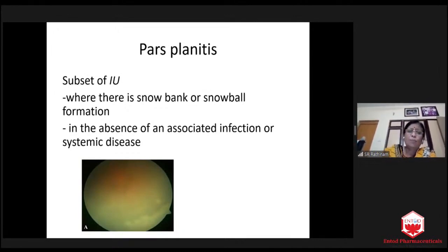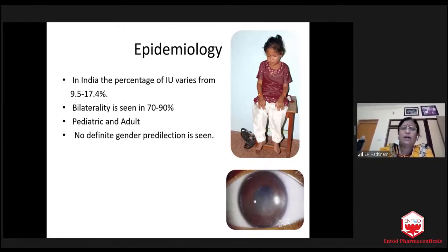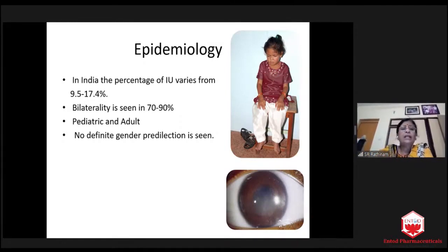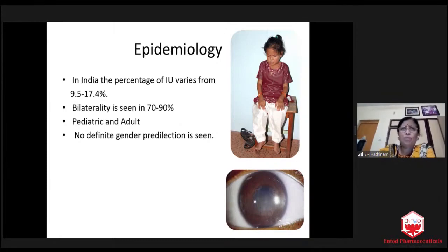You can have either snow bank or snowball formation. In India, we have 10 to 17% of people in a uveitis clinic suffering from intermediate uveitis, forming 10 to 20%. It is seen bilaterally in up to 90% of patients. It occurs both in children as well as adults. There is no definite gender predilection. When it affects children, it really, really bothers us to control intermediate uveitis. It is extremely important to rule out tuberculosis.